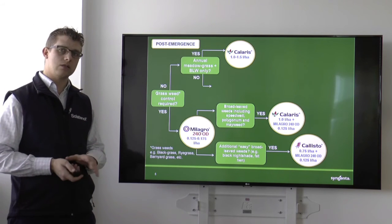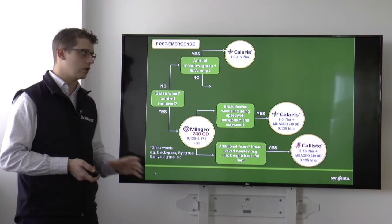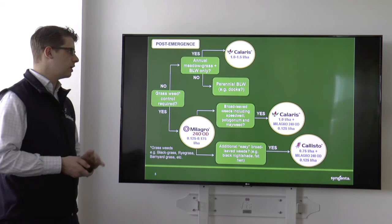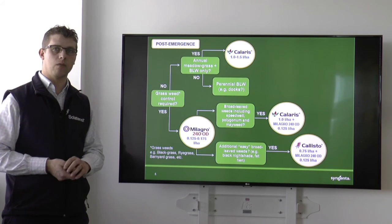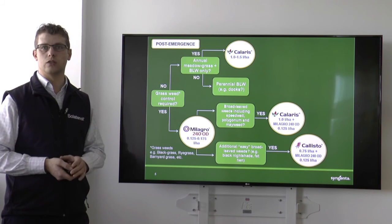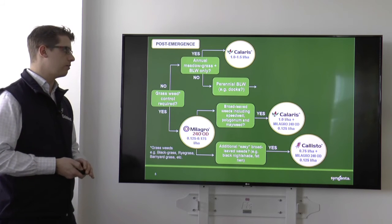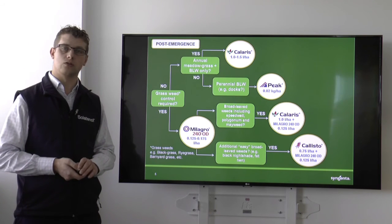If, however, annual meadow grass isn't so much of an issue, and it's just the broadleaf weeds we're looking to control, particularly perennial broadleaf weeds like docks, also things like charlock or volunteer oilseed rape, then Peak is a very useful product to control these weeds. So a dose of 0.02 kilos a hectare should do us nicely.